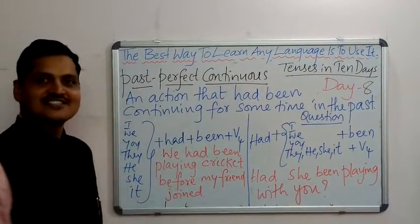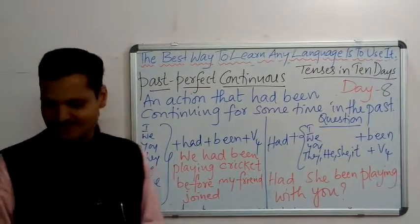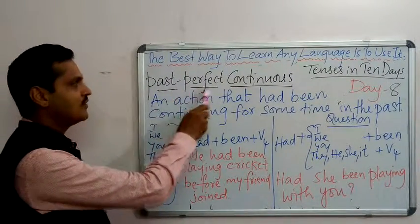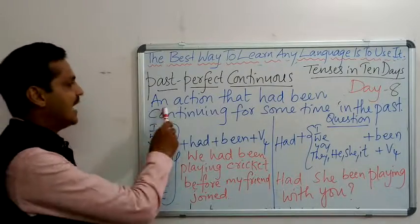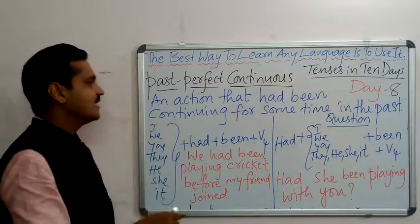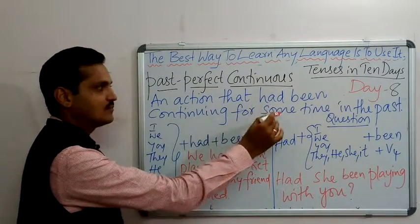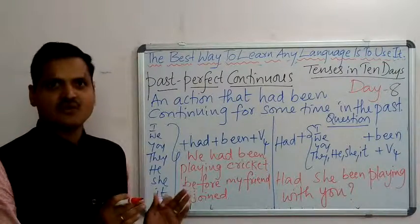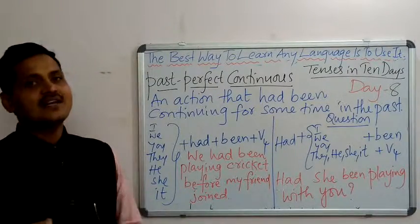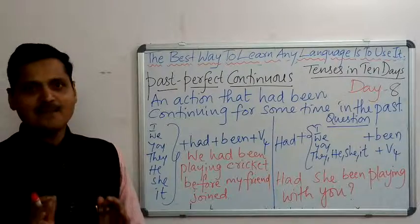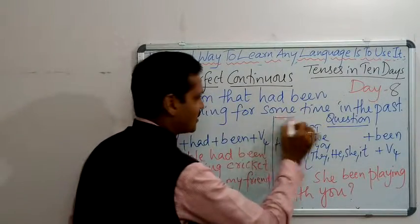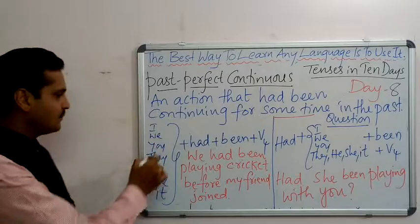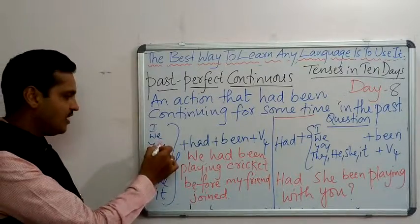...Past Perfect Continuous Tense. When do we use this tense? Past Perfect Continuous is used for an action that had been continuing for some time in the past. We use this tense for all actions which had been continuing for some time in the past. Please note that. Now, how would the structure look? The subject — I, we, you, they, he, she, it — plus 'had' plus 'been' plus...